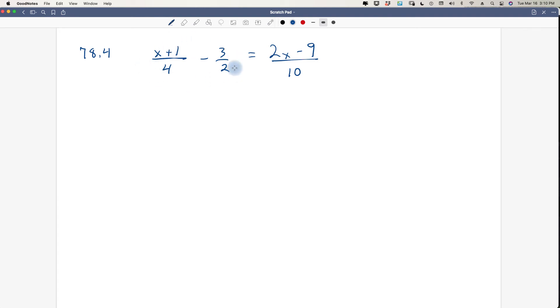So let's do x plus 1 over 4 minus 3 over 2 equals 2x minus 9 over 10. Now remember, you can only eliminate the denominator through multiplication in an equation. You have to have some type of equal sign, an inequality sign. It has to be two sides. You can't just have a statement. If you just had this right here and you got a common denominator of 8, you couldn't get rid of the 8, because that would change the entire value of your expression.